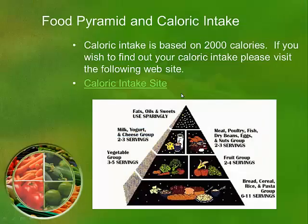I encourage you to go to that link and do your own caloric intake to see where you're at. The food pyramid — you've probably seen this before: 6 to 11 servings of rice and pastas, 3 to 5 vegetables, 2 to 4 fruits, 2 to 3 milk and cheese, and 2 to 3 meat and poultry. One of the projects you'll do is a food journal that breaks out your actual caloric intake — carbs and so forth.